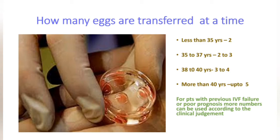Regarding how many eggs are transferred at a time: for women under 35 years, two eggs can be transferred; 35 to 37 years, two to three eggs; 38 to 40 years, three to four eggs; and for women over 40 years, up to five eggs can be transferred. For patients with previous IVF failure or poor prognosis, more embryos may be used according to clinical judgment.